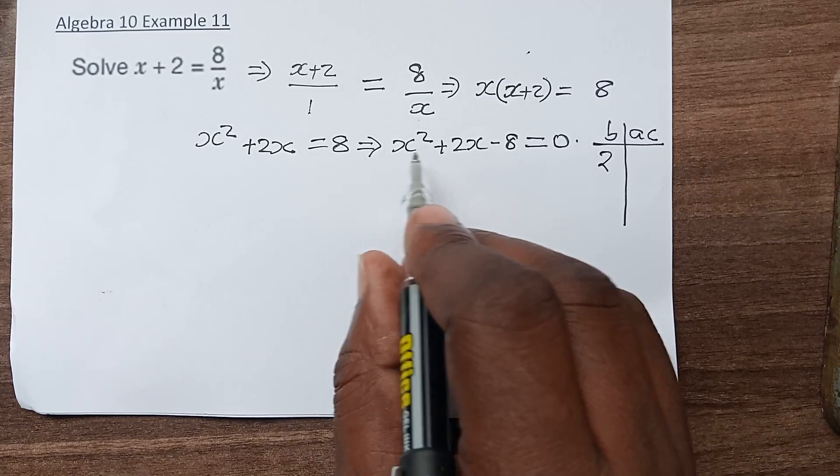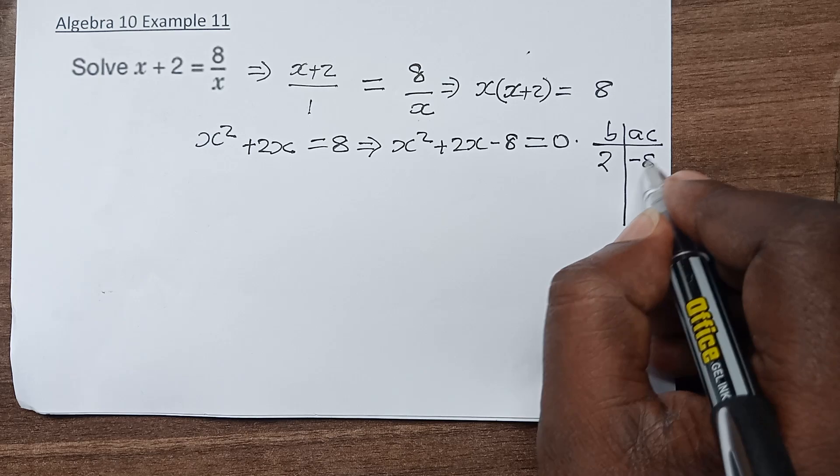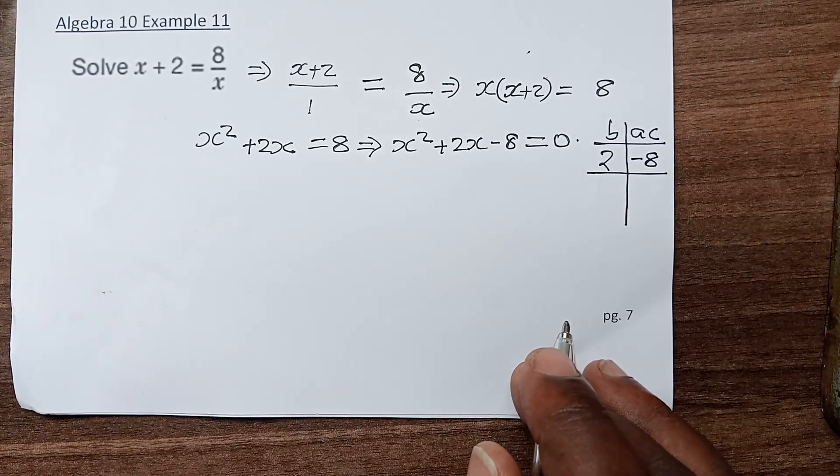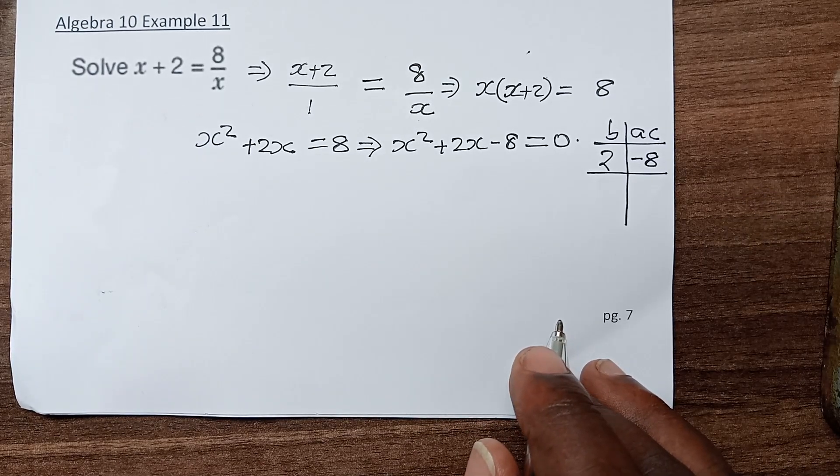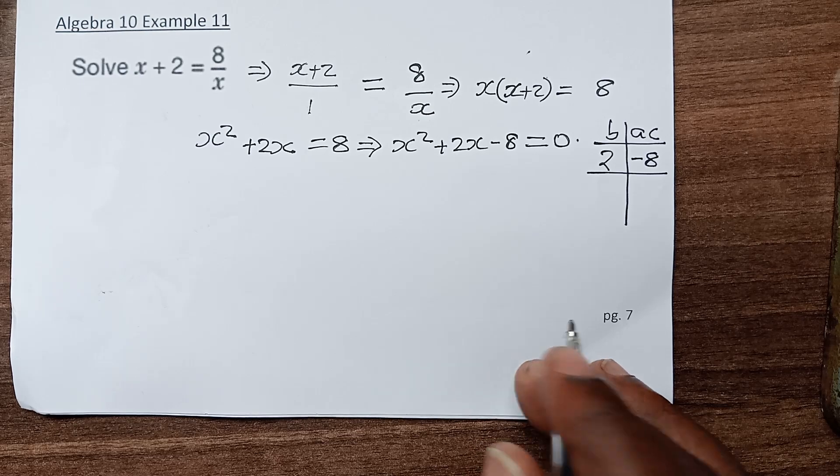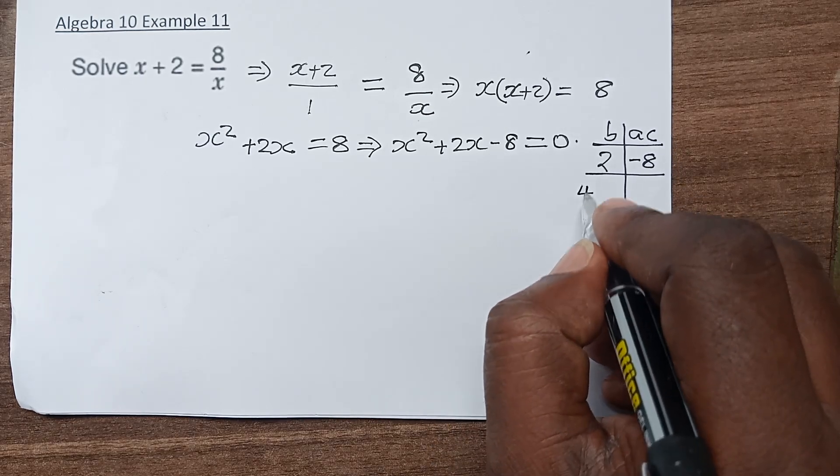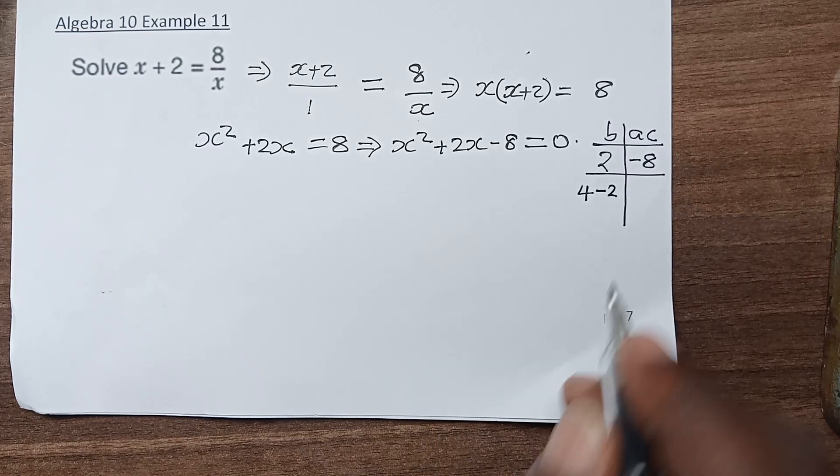Our b is 2, and our ac is minus 8. Two numbers we multiply give us minus 8, and two numbers we add give us plus 2. These are 4 and negative 2.